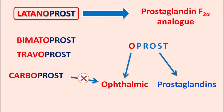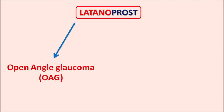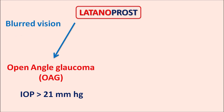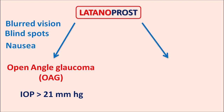In this video we will discuss how latanoprost acts, its important precautions, side effects, and clinical uses. Since this is an ophthalmic prostaglandin, this drug can be used in the treatment of open-angle glaucoma (OAG). In open-angle glaucoma, intraocular pressure is raised greater than 21 mmHg, resulting in reduced vision, blurred vision, blind spots in peripheral vision, and nausea. Latanoprost reduces intraocular pressure by increasing the drainage of aqueous humor.